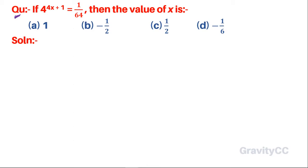Question: if 4 to the power (4x + 1) is equal to 1 upon 64, then find the value of x.